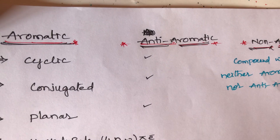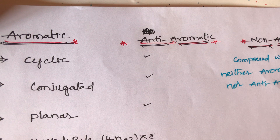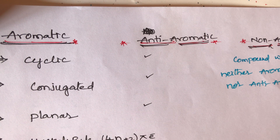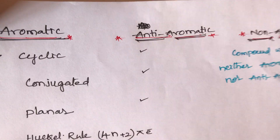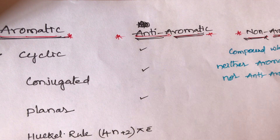Hi students. Now a very important topic: aromatic, anti-aromatic, and non-aromatic — how to find out aromaticity. What are the main conditions? First, we discuss the aromatic conditions.